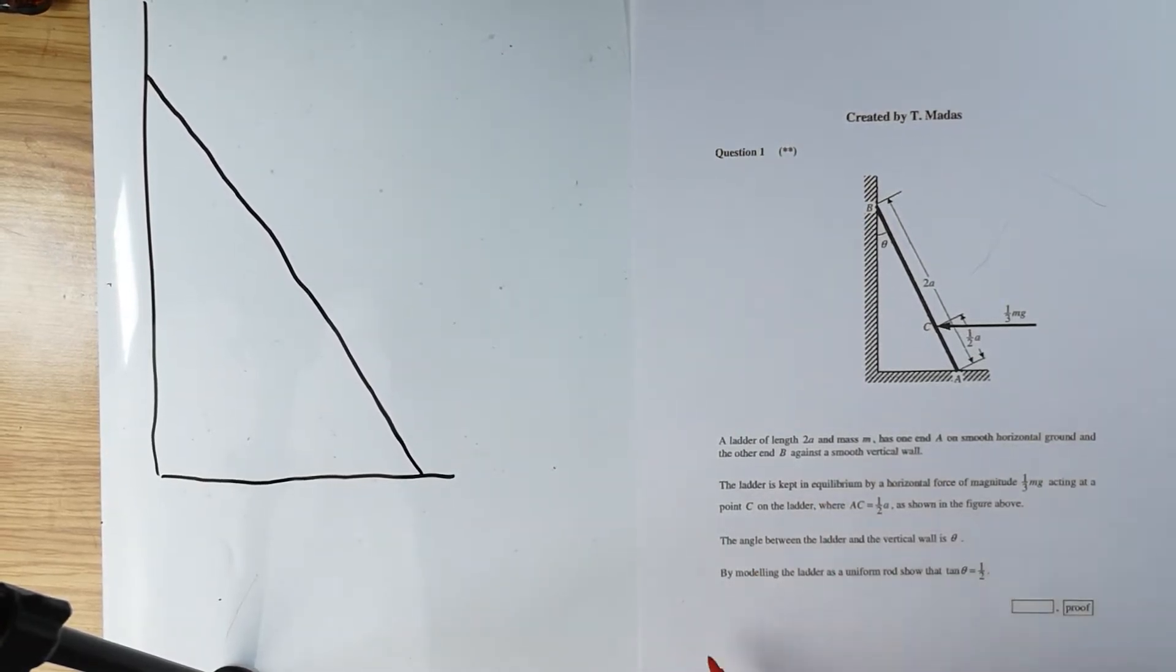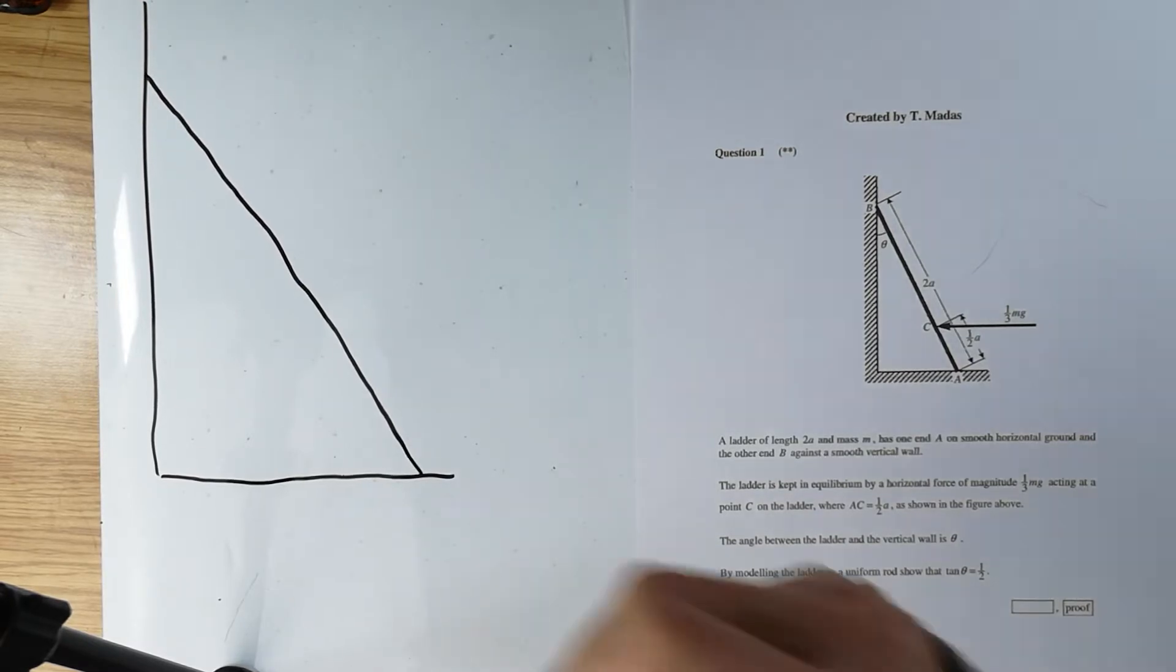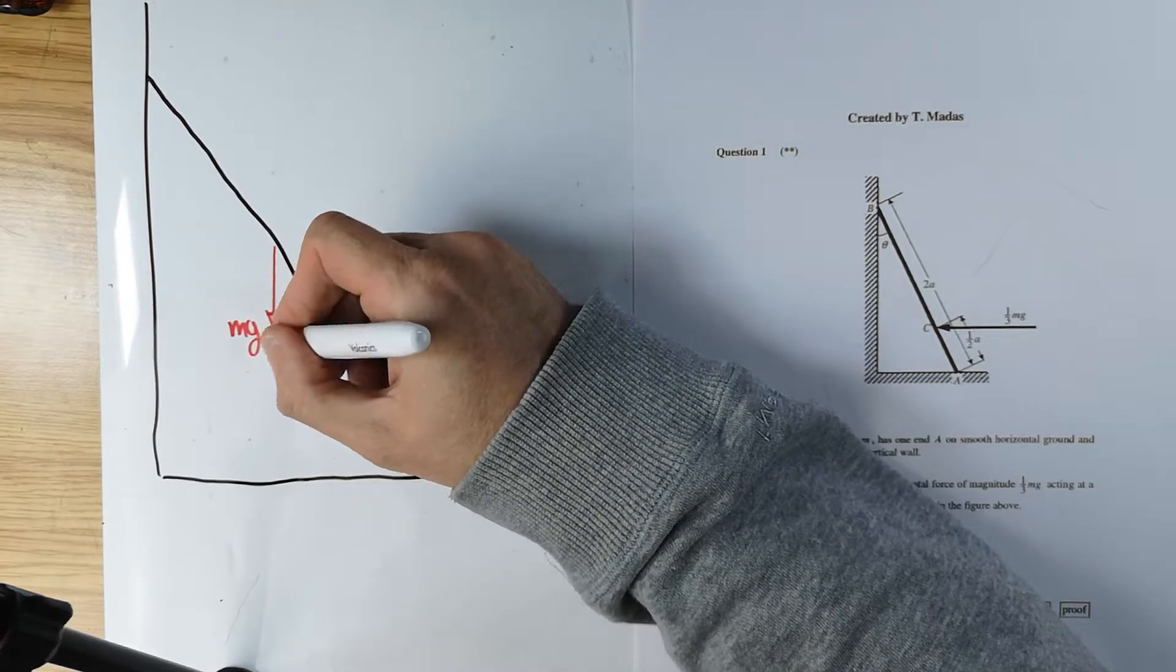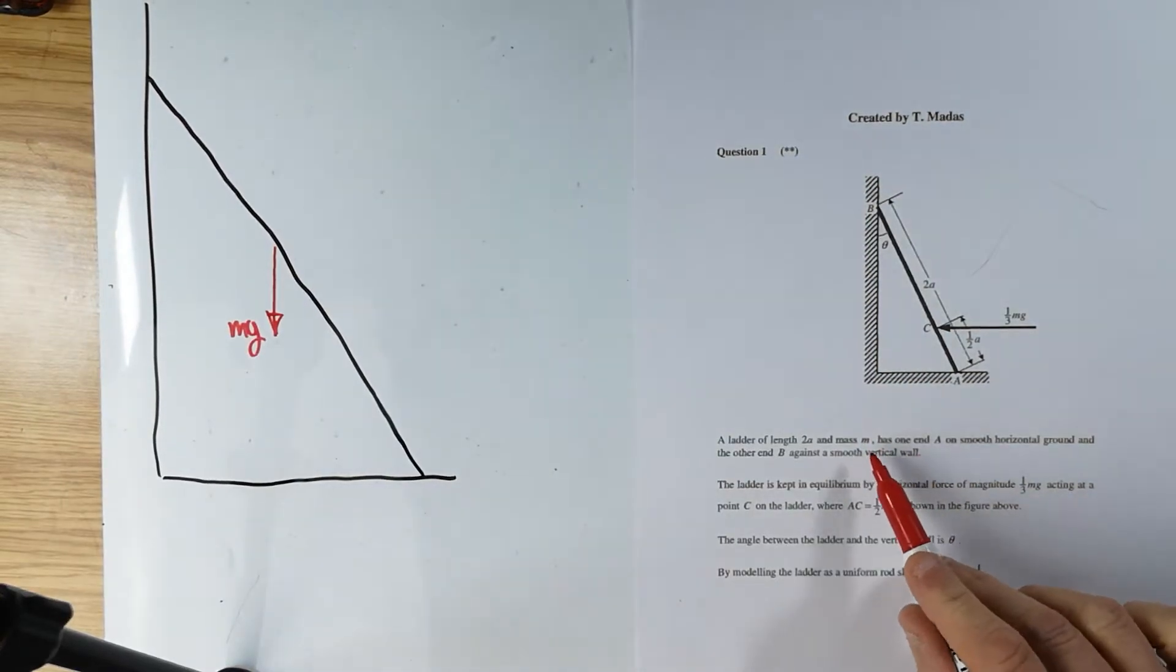With this kind of problem, I tend to put the lengths at the very end. But I have taken this information in. Mass M. So it will have a weight. The weight normally acts at the midpoint if it's uniform. Is it uniform? By modeling the ladder as a uniform rod. So this is the weight, and the weight is, of course, Mg, if it has mass M.